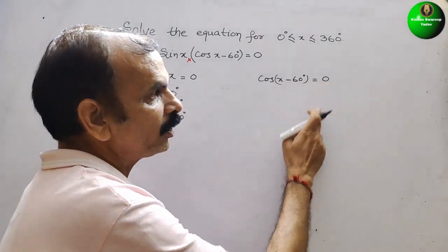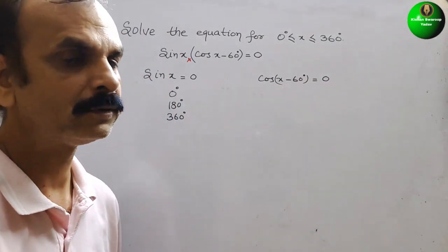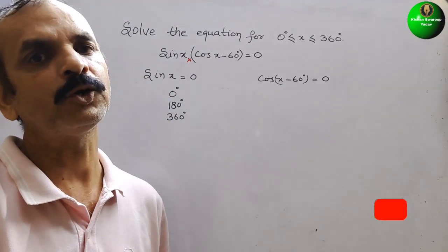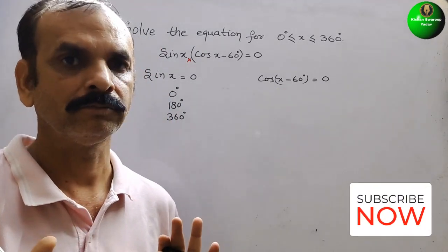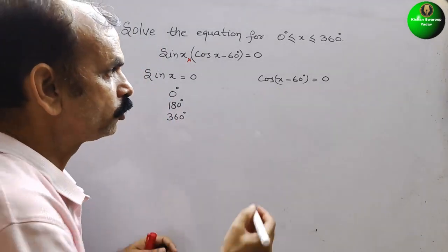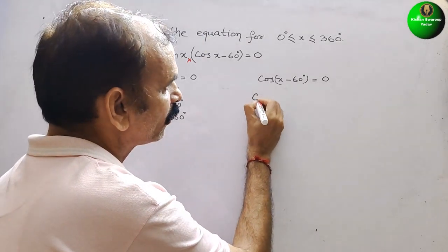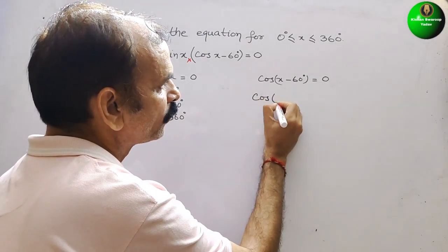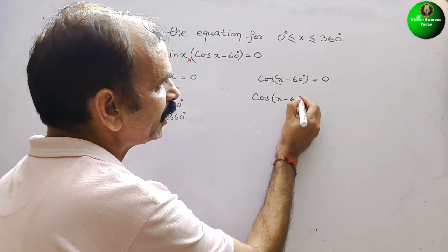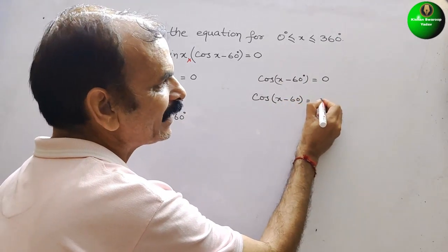Cos 0 is where? Cos 0 is at π/2 that means 90 degree. So we can say cos(x - 60°) is at 90 degree.